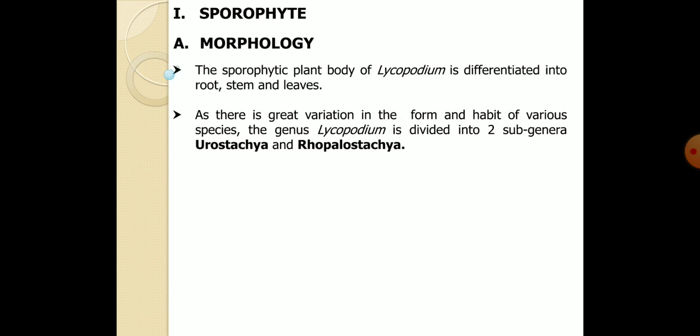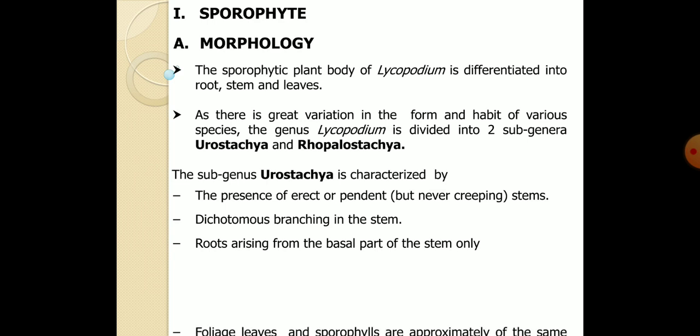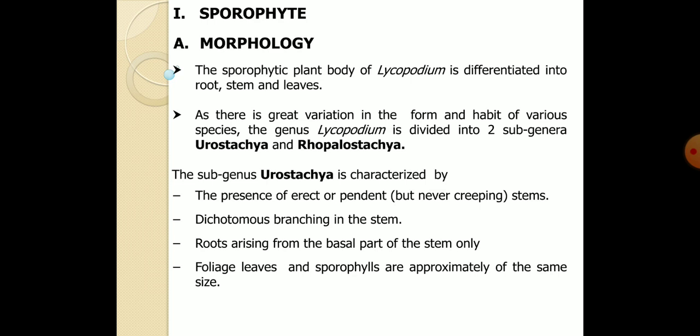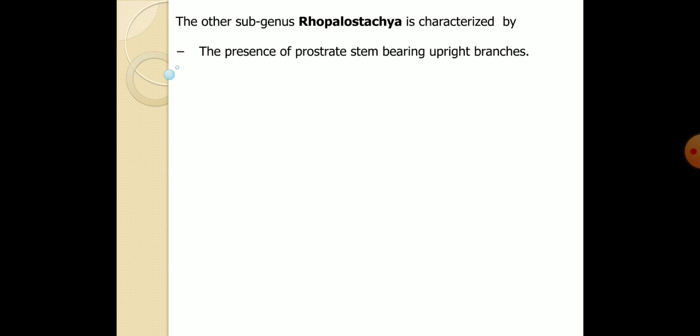Morphologically, the sporophyte or plant body of Lycopodium is differentiated into root, stem, and leaf regions. Due to great variations in habitat, Lycopodium is divided into two subgenera: Urostachya and Rhopalostachya. Urostachya is characterized by erect or pendent habit, dichotomous branching, roots arising from the base, and foliage leaves and sporophylls of approximately uniform size. The sporophylls are not organized into compact cone structures, and vegetative reproduction is by bulbils. Lycopodium phlegmaria is a best example.